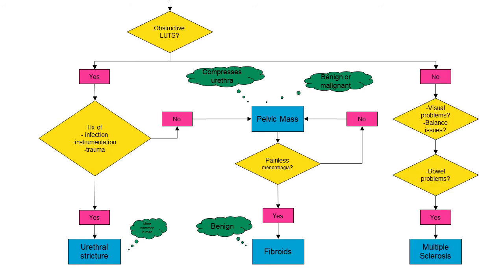Going back to the question of obstructive lower urinary tract symptoms — if the answer is no, we can ask: have they had any visual problems, any problems with their balance, or any problems with their bowel as well? If yes, we can consider the diagnosis of multiple sclerosis.